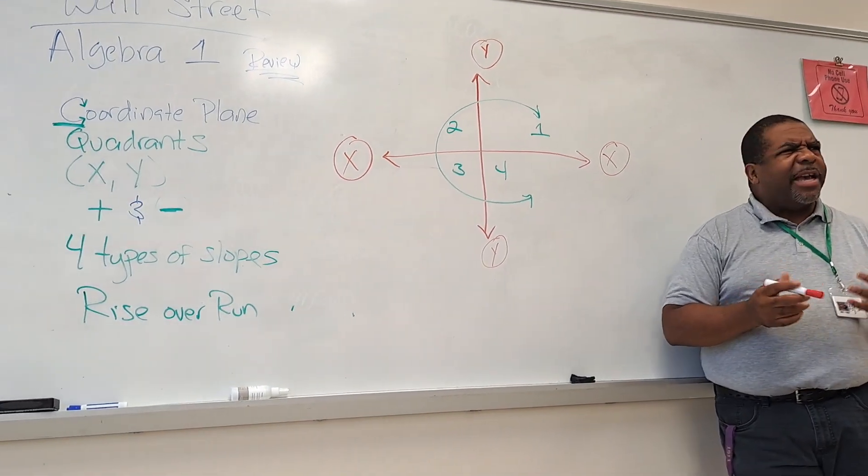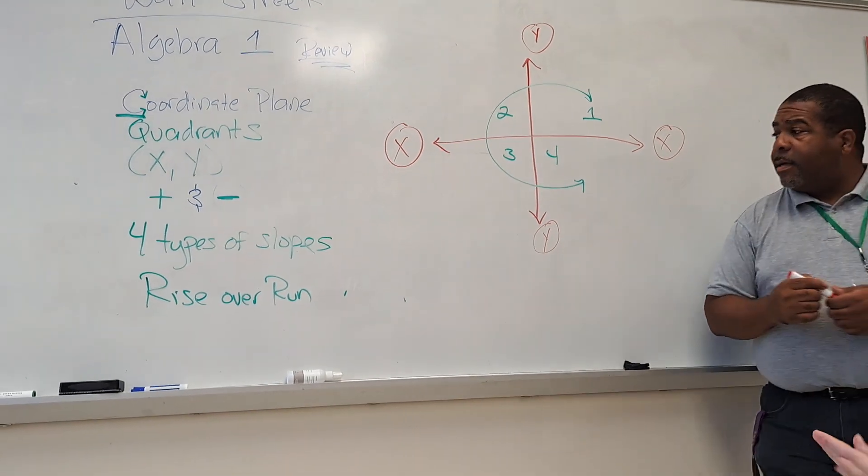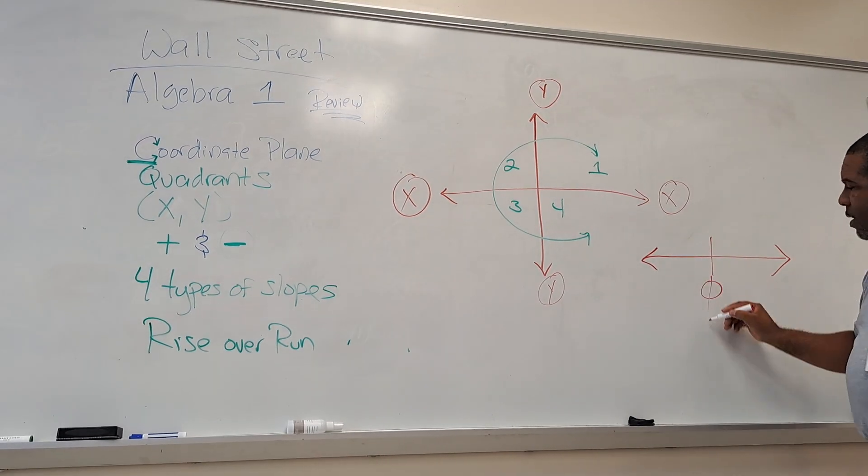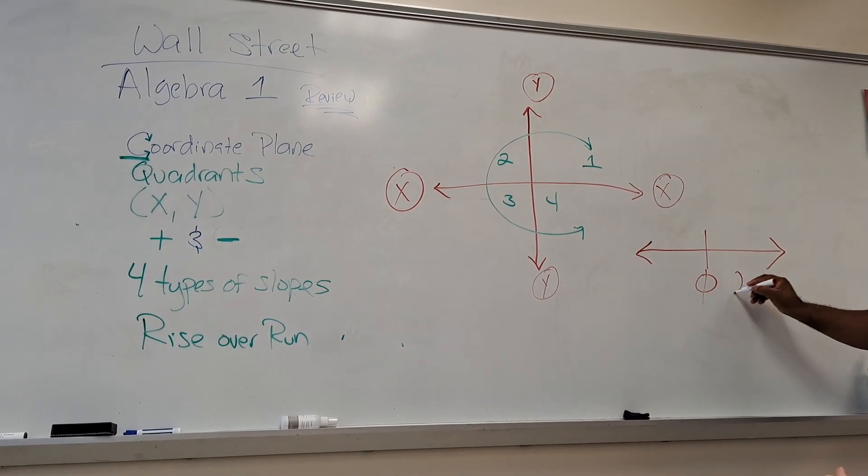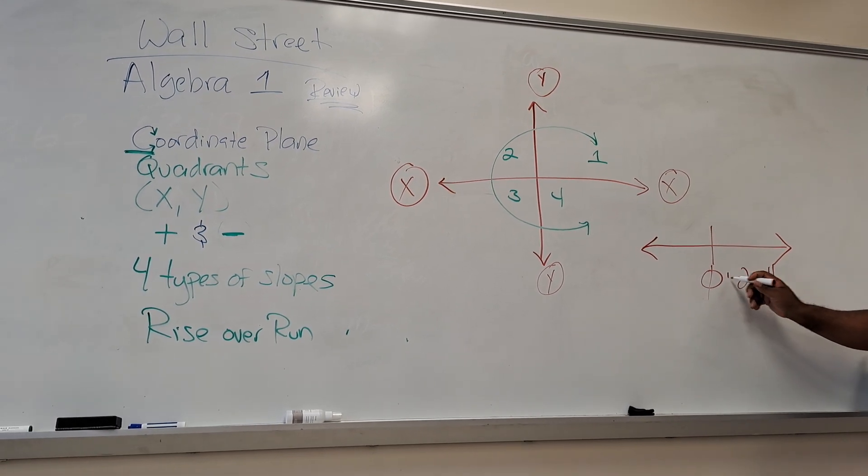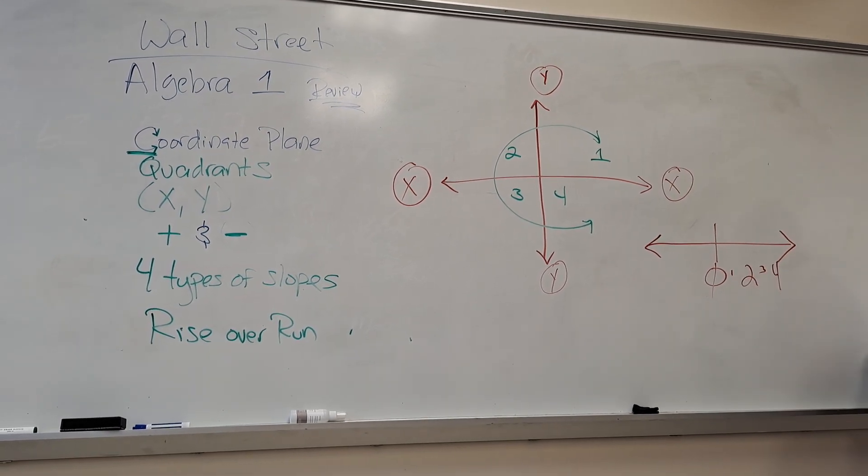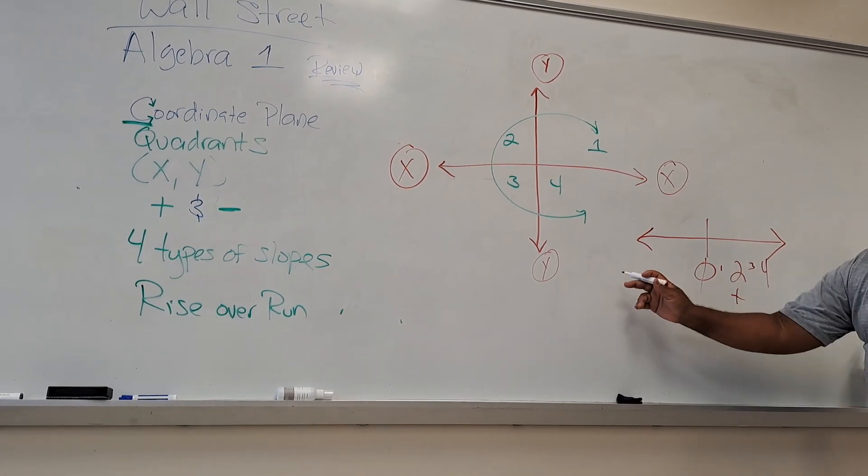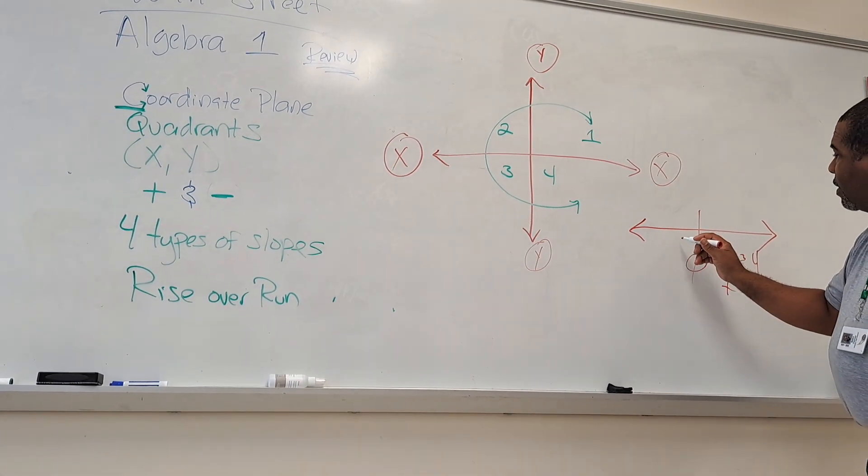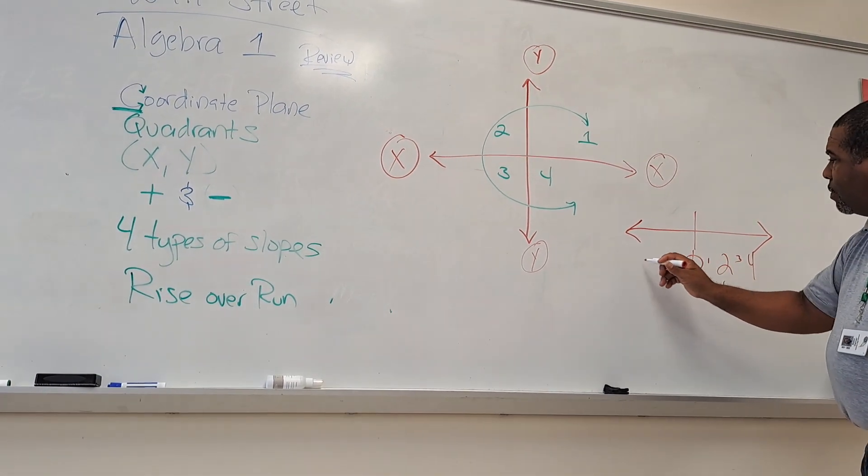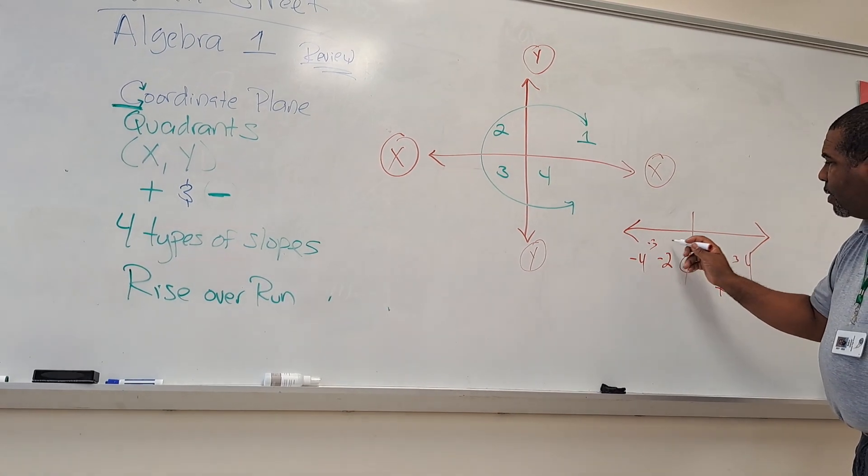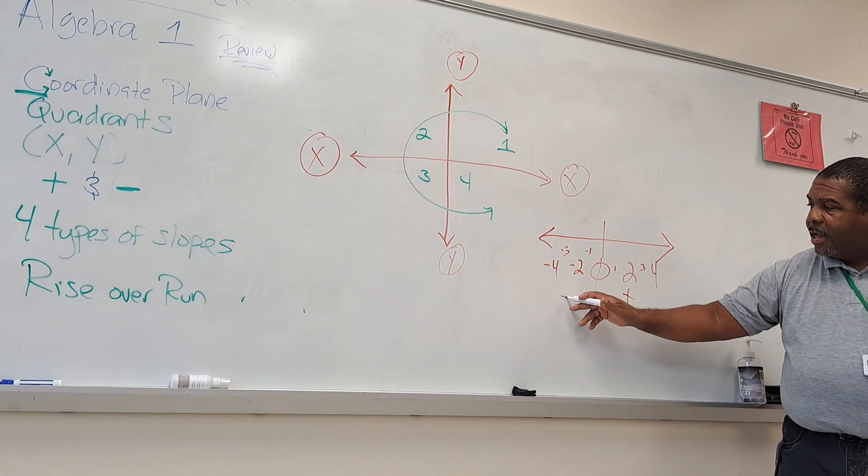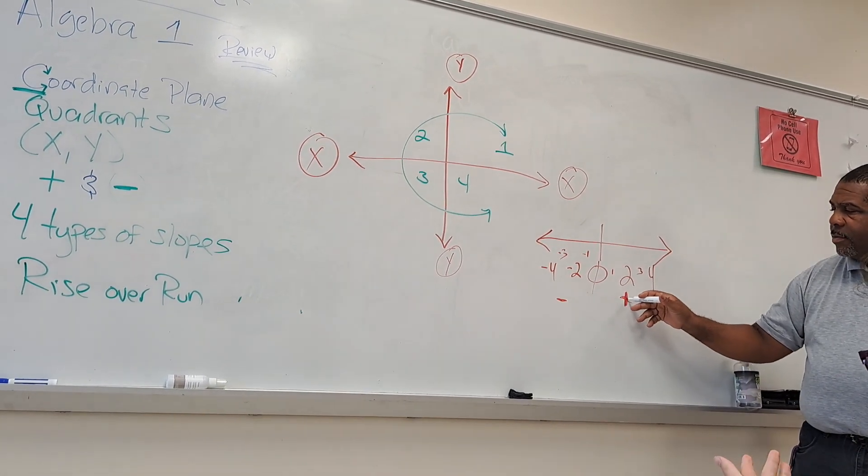We talked about last year a number line. And a number line, this middle section was zero, right? So this would be two, this would be four. There's really a one here, three here, right? These are all positive numbers, right? So these would be what type of numbers? Negative. So we're going to have negative two, negative four, negative three, negative one. So here's our negative numbers, here's our positive numbers.